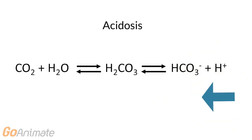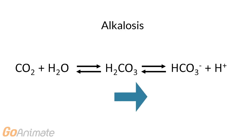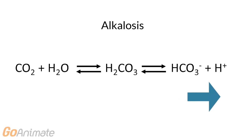We can use this equation to illustrate how an increase in hydrogen ion concentration, or acidosis, causes the reaction to move toward the left, which promotes the formation of carbonic acid. Likewise, a decrease in hydrogen ion concentration, or alkalosis, causes the reaction to move to the right, promoting the dissociation of carbonic acid into hydrogen and bicarbonate ions.